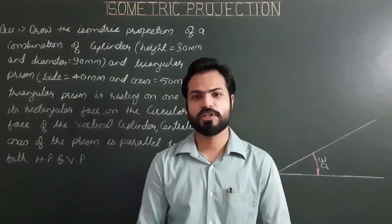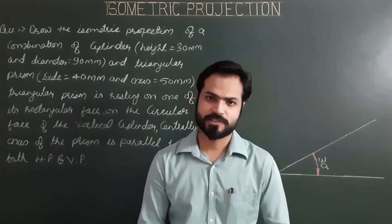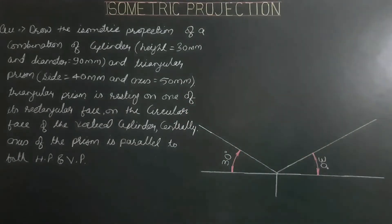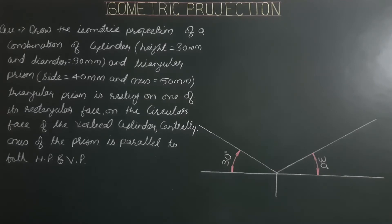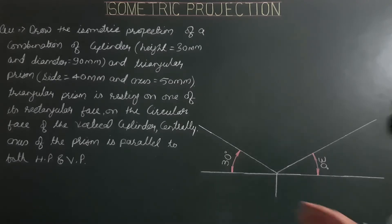Hello everyone, a very good morning to all. Hope we are ready for today's problem. The isometric projection of a combination of cylinder — height 30 mm, diameter 90 mm — and triangular prism — side 40 mm, axis 50 mm. The triangular prism is resting on one of its rectangular faces on the circular face of the vertical cylinder, and the central axis of the prism is parallel to both HP and VP.